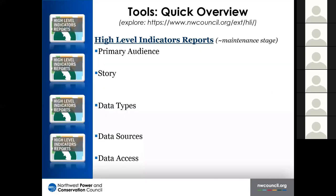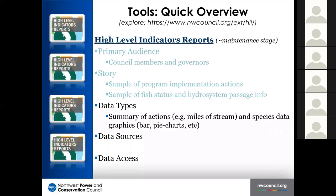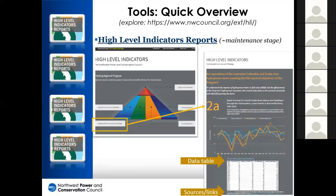The High-Level Indicator Report has been up for about 10 years and focuses mainly on council members and governors. It's a highlight of types of actions being implemented through the program and fish status, drawing information and summarizing it with pie charts and bar graphs. You're limited to viewing the data table and original data sources but can't download. You start on the entry page, pick a topic, then see a traditional bar or line graph, and can click to expand and see the data table or sources.